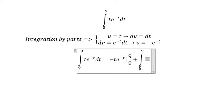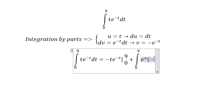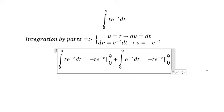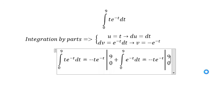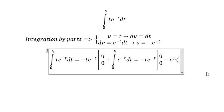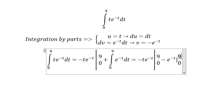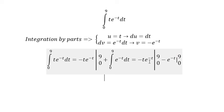And we have e to the power of minus t dt. So in here we can find the answer. Now we put the numbers 9 and 0 in here.